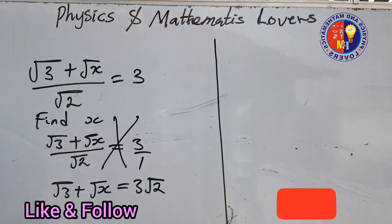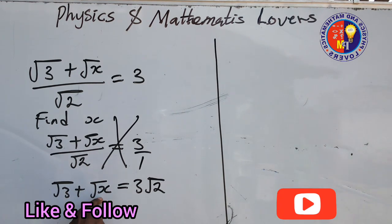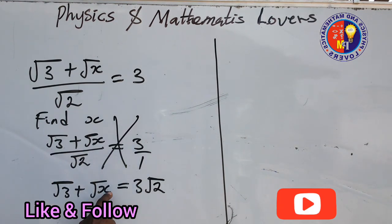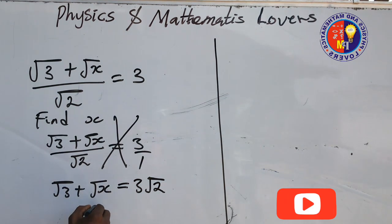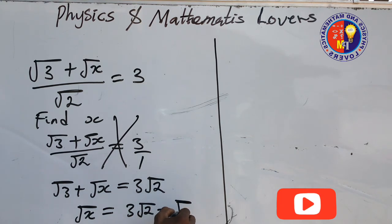At this point we have radicals on both sides. We need to make root x the subject of the formula by moving root 3 to the other side. Since root 3 is positive, when it crosses to the other side it becomes negative. So we have root x equal to 3 root 2 minus root 3.